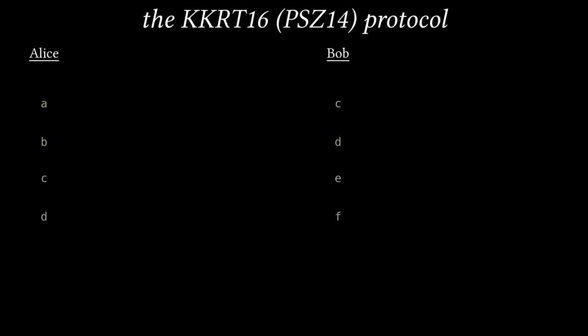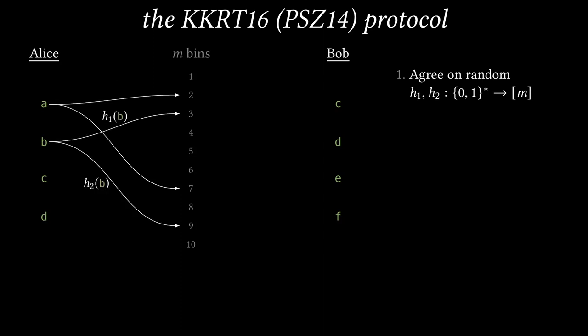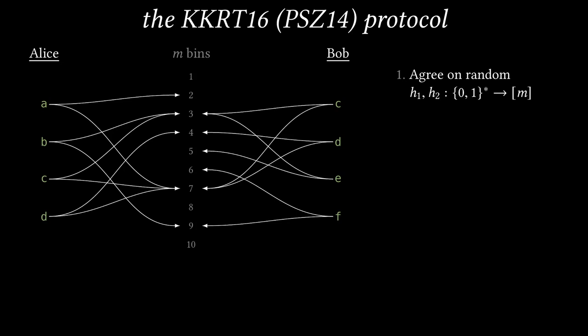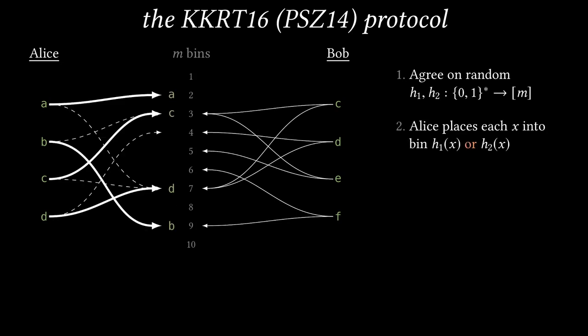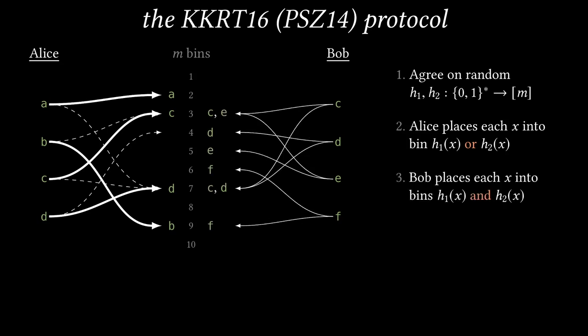Now I can tell you how the KKRT protocol works. Remember, it's the fastest protocol for two-party, semi-honest PSI. I'll describe the high-level idea of KKRT, which is the same overall idea as the protocol of Pincus, Schneider, and Zoner. In this example, Alice has items A, B, C, D, and Bob has items C, D, E, F. First, they agree on two random functions that map their items into M bins. For example, H1 could map item A into bin number 2, and H2 could map item A into bin number 7. These hash functions indicate two possible bins to place each item. Alice places each item into one of the two possible locations. This can be done with a process called cuckoo hashing, if there are a sufficient number of bins. Bob can't anticipate which of the two locations Alice will select, so he places each item into both of its possible locations.